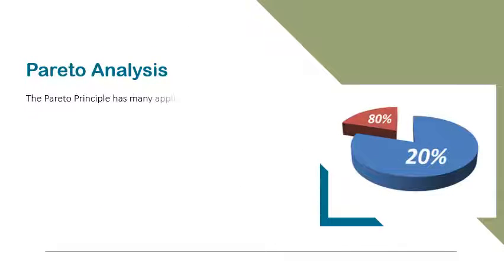The Pareto principle has many applications in quality control. It is the basis for the Pareto diagram, one of the key tools used in Total Quality Control and Six Sigma.